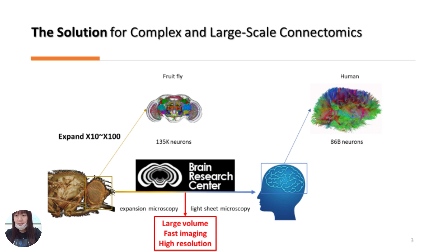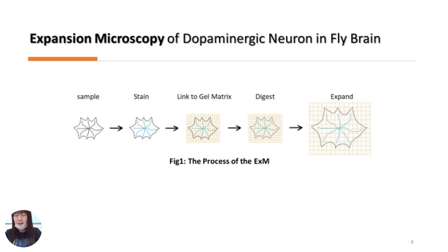We study the Drosophila brain and ultimately aim to explore the human brain. We combine expansion microscopy analysis for the best acquisition of high-resolution 3D images in large volumes of sample. Expansion microscopy is a novel imaging technology that has recently been applied in neuroscience. It can expand the volume of samples through physical and chemical processing while maintaining fine structures and details, allowing 3D structures of neurons to be observed at high resolution.